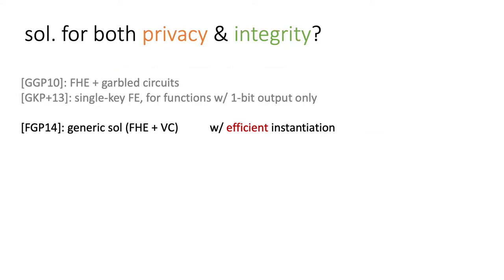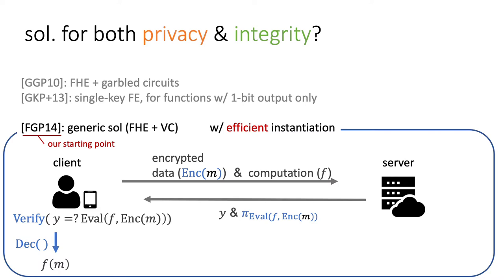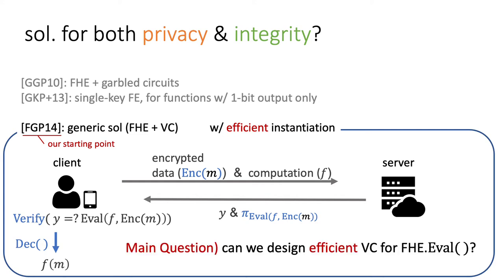Then, what is the solution for both privacy and integrity? There are only a few works on this, and only FGP14 provides a solution with an efficient instantiation. The solution of FGP14 is to outsource the computation with fully homomorphic encryption, then verify the FHE computation. This can be a simple solution, but the problem is to design an efficient VC for the FHE computation. Our main contribution is to provide a solution to this problem.